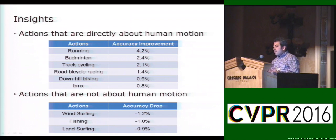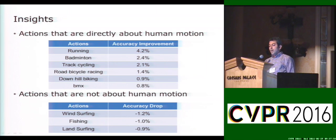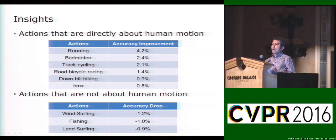In our results, we find that for action classes directly about human motion, we improve accuracy as expected. One interesting observation is that even though we do not explicitly have biking labels in our 3D skeleton training data, we were still able to improve accuracy. Unfortunately, for some action classes not directly about human motion, such as windsurfing, we see a drop in accuracy, because for those actions it was hard to capture relevant information from 3D human skeleton data.